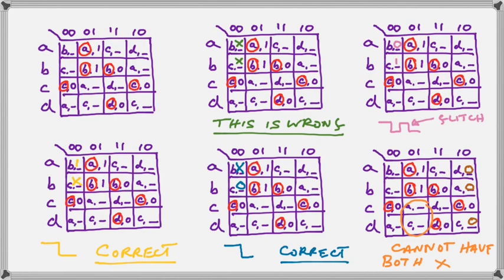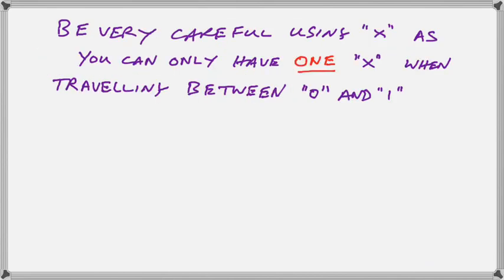So we have to have at least two or more unstable states for it to be called a cycle. So just remember, be very careful using x, as you can only have one of those x's when traveling between a 0 and 1.